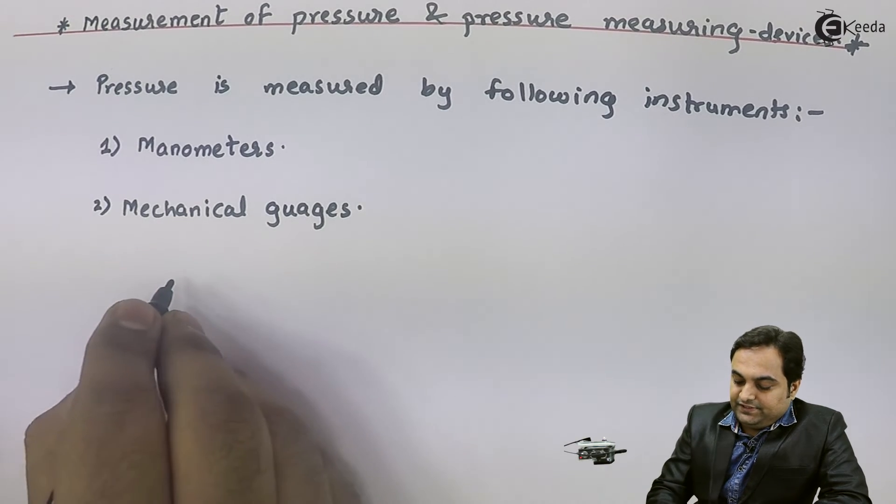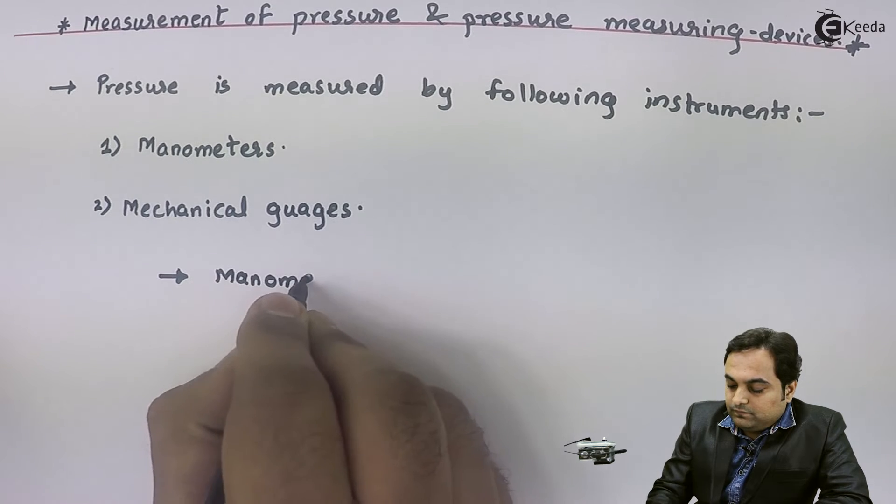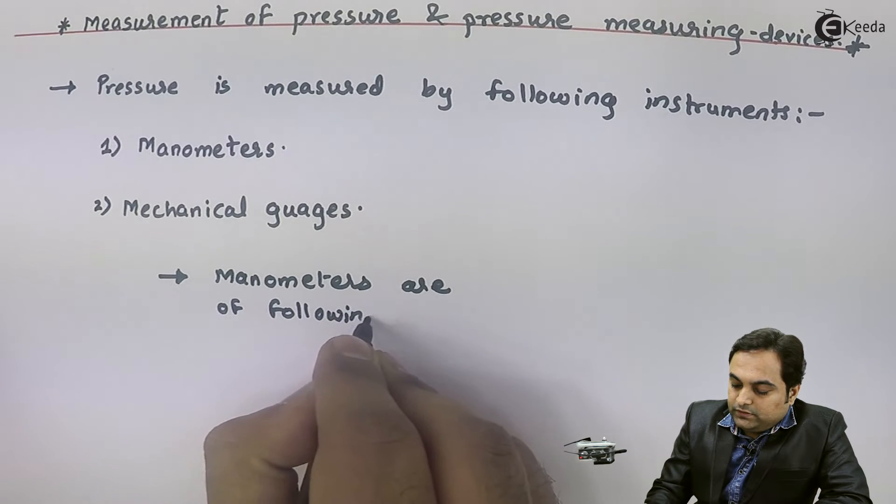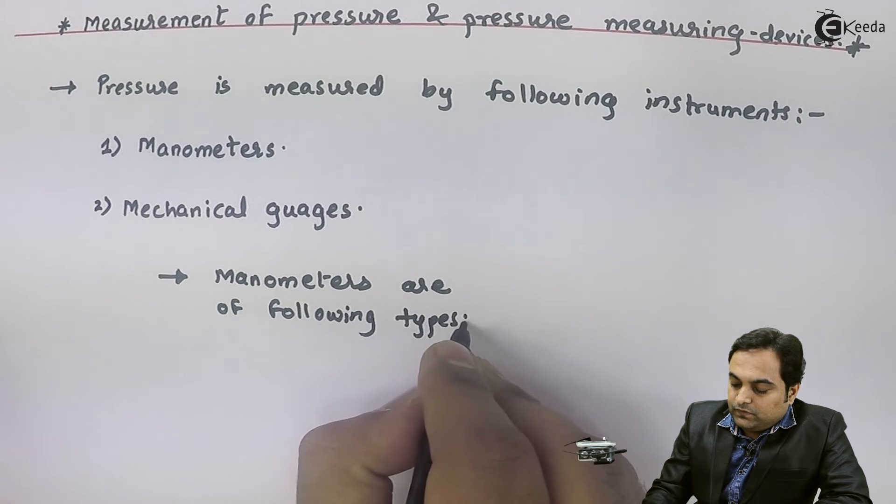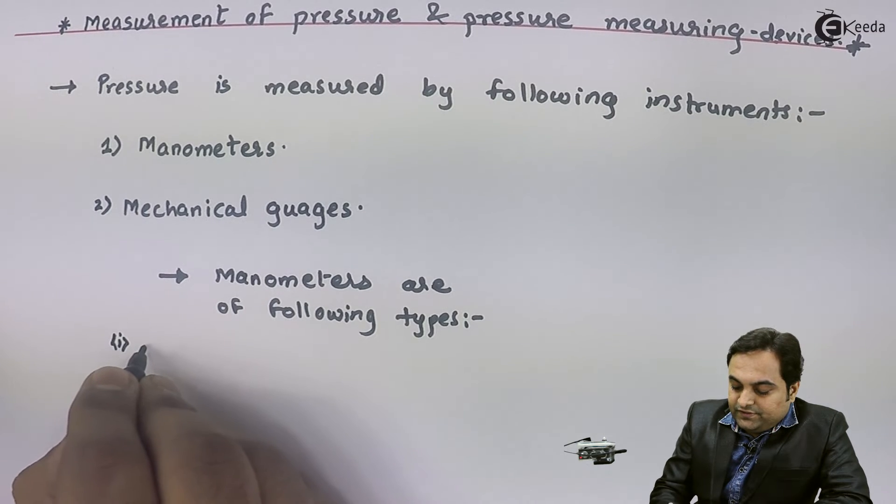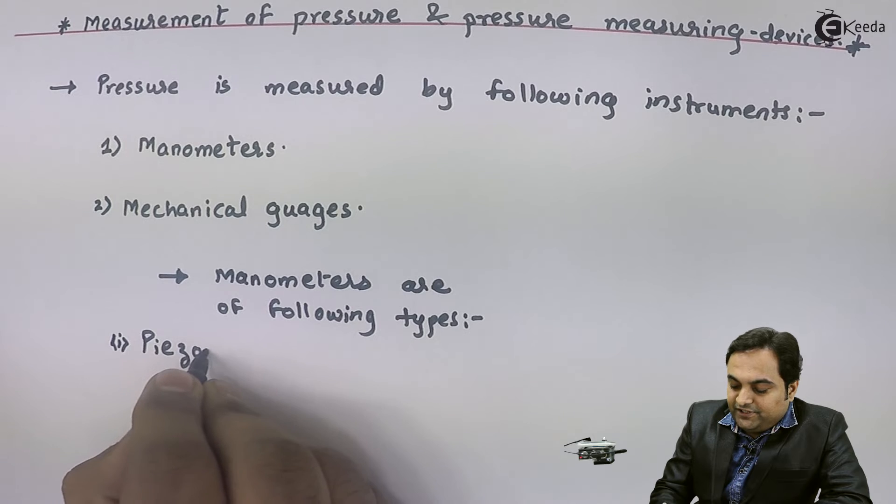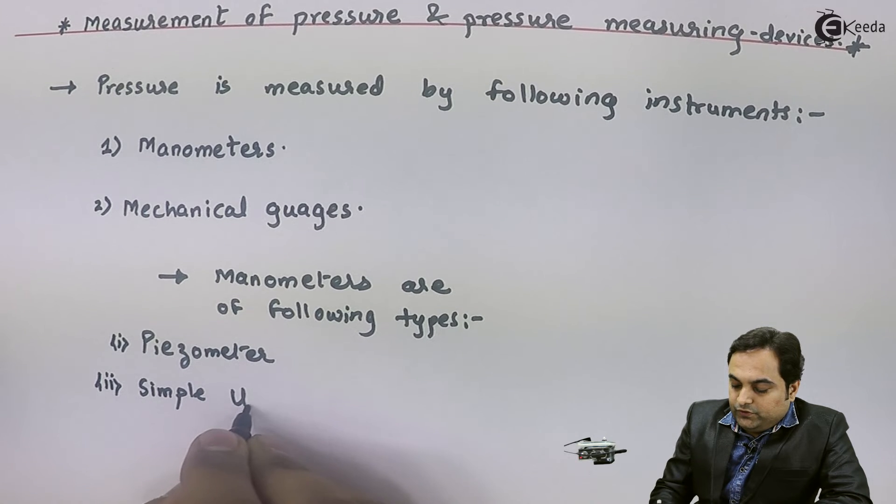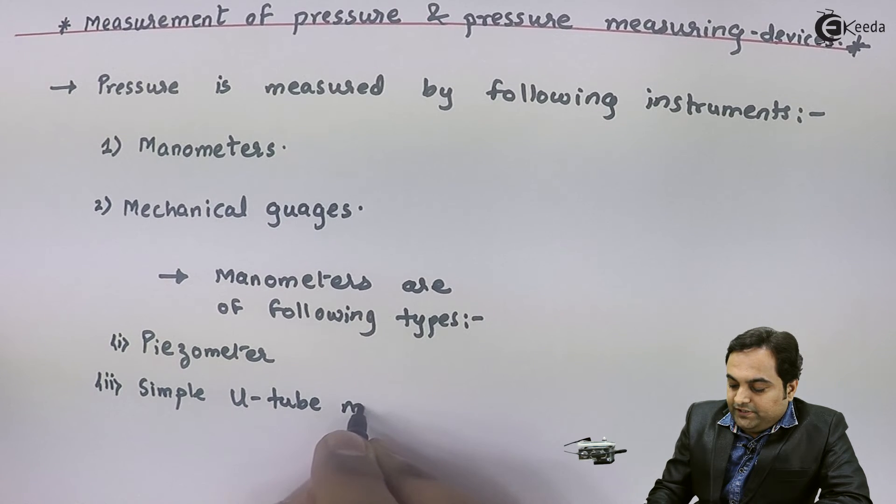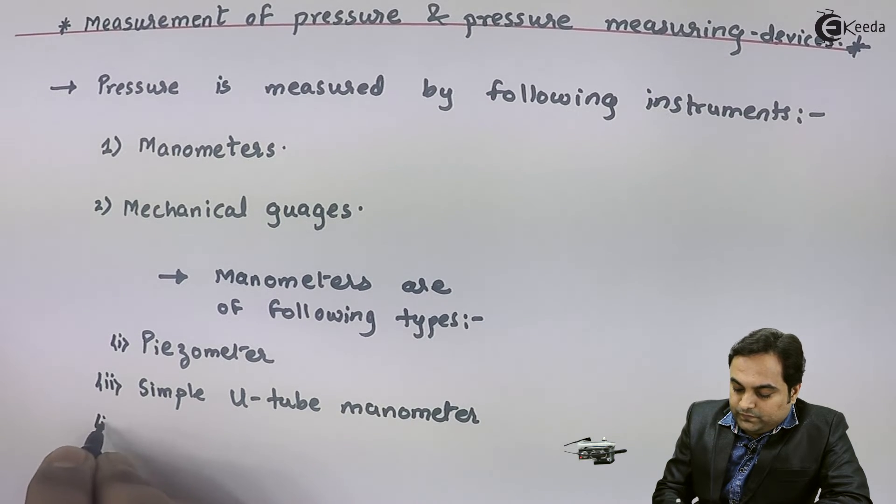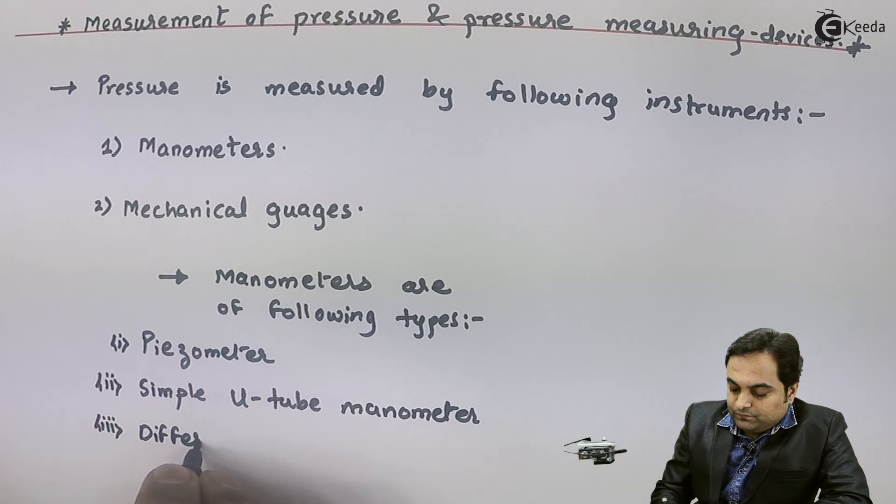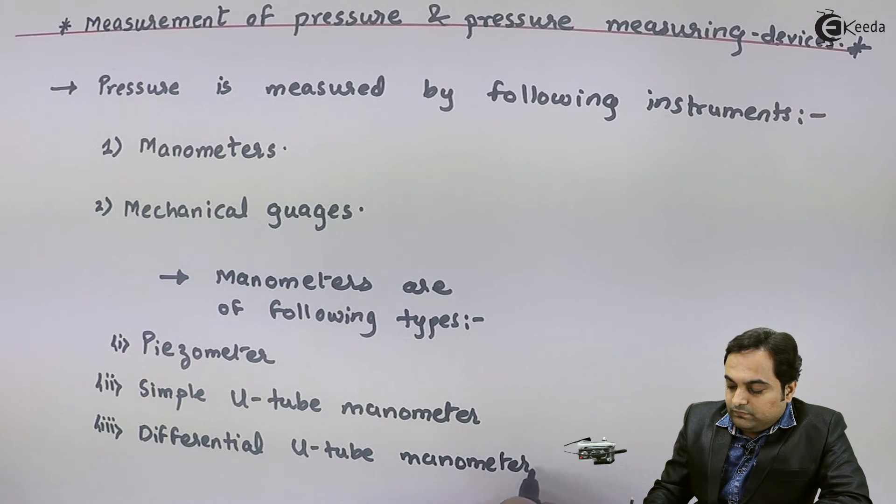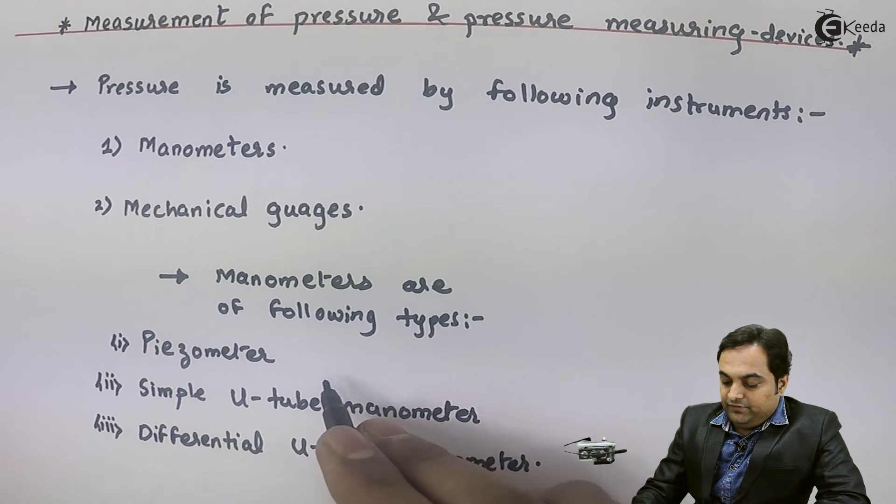Manometers are of following types. We have piezometer as the simplest form of manometer, then there is simple U-tube manometer, next there is differential U-tube manometer. So these are the common varieties of manometers.